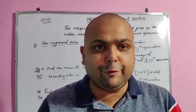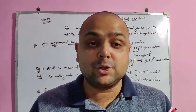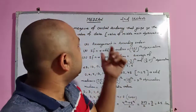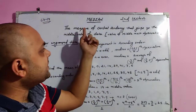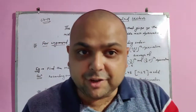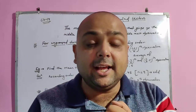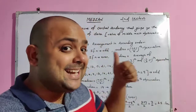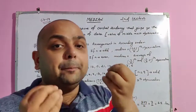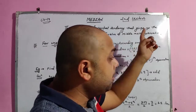This topic is very familiar to all of you as you have already studied it in previous classes. As the name suggests, median is the measure of central tendency. There are three measures of central tendency: mean, median, and mode. Median helps us find the middle value — the value of the middlemost observation in the data.